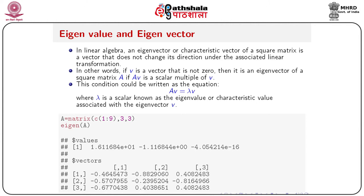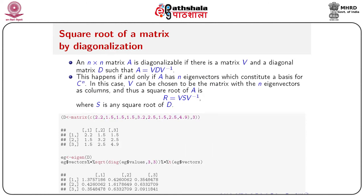For illustration, assign a three by three matrix A using the sequence 1 to 9 split into three rows and three columns. The function eigen() — if you pass a square matrix within it — will give you both the eigenvalues and eigenvectors. The first component gives the eigenvalues and the second gives the eigenvectors.